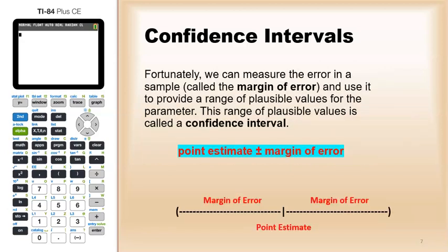Fortunately, we can measure the error in the sample, which we call the margin of error, and use it to provide a range of plausible values for the parameter. This range of plausible values is called the confidence interval. And the way we compute a confidence interval is we take a point estimate and we add and subtract the margin of error.